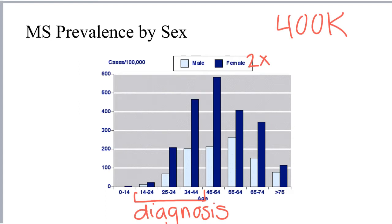The graph shown here displays the prevalence of MS in number of cases per 100,000 of the population. We can learn two things from this graph. First, that the prevalence of MS is highest in the 30s, 40s, and 50s, which makes sense given that the peak incidence of diagnosis is somewhere between 30 and 40. Second, MS is more prevalent in females compared to males by about a factor of two across most age groups.